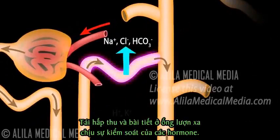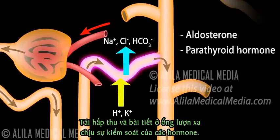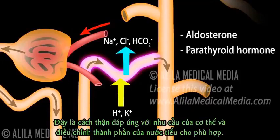Reabsorption and secretion in the distal convoluted tubule are under the control of various hormones. This is how the kidneys respond to the body's needs and adjust the composition of urine accordingly.